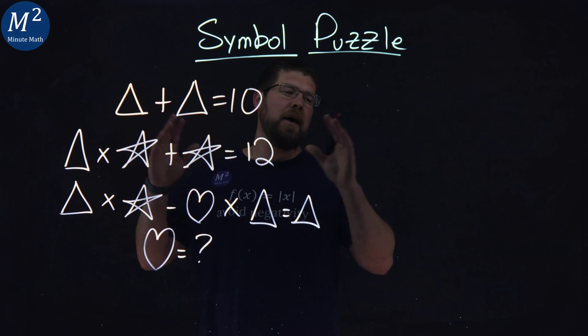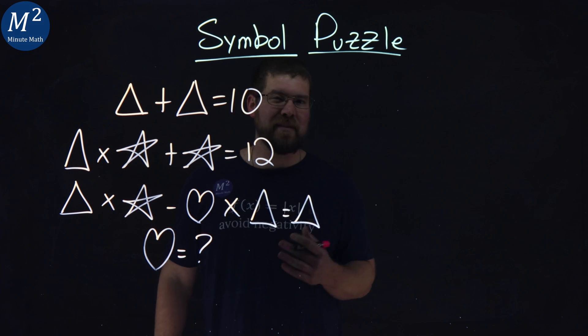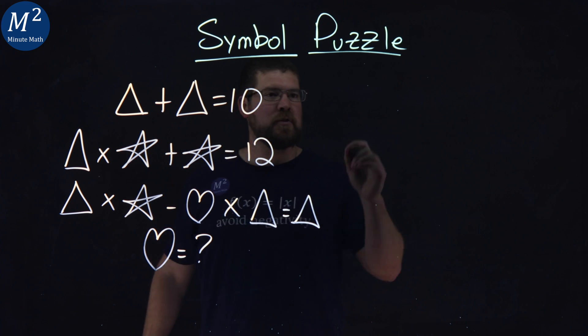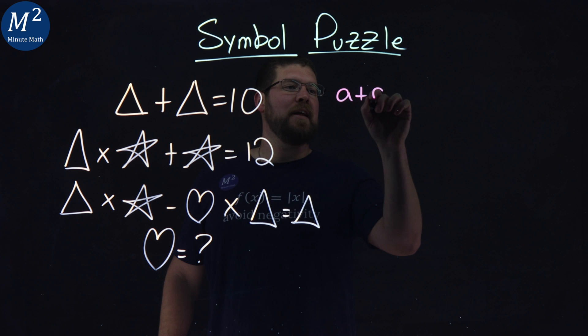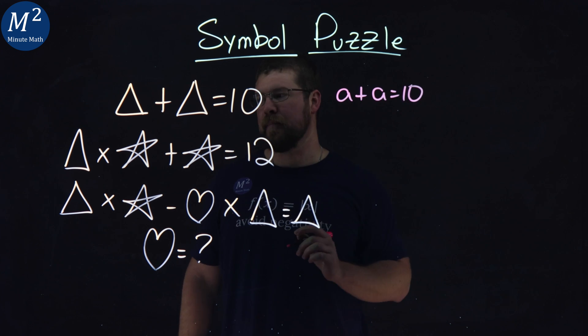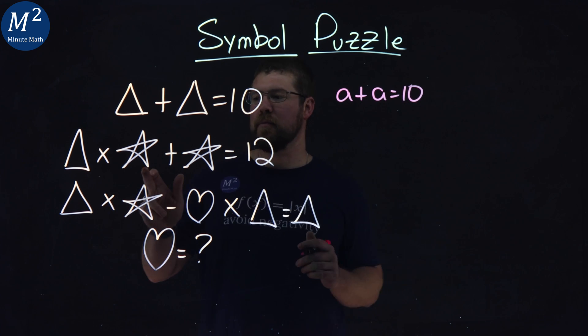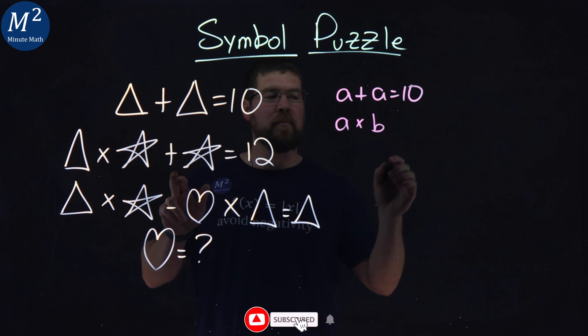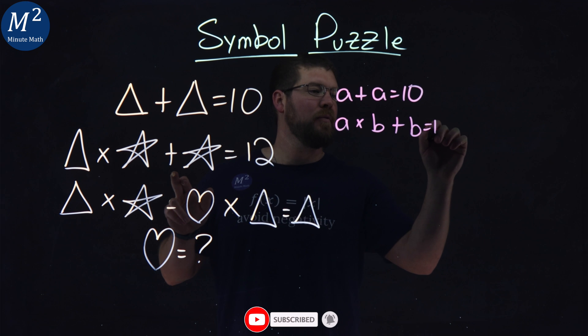First things first, I'm not writing triangles, stars, and hearts this whole time. Let's use variables. Triangles are A, so A plus A equals 10. Stars are B, so A times B plus B equals 12. This makes it easier.